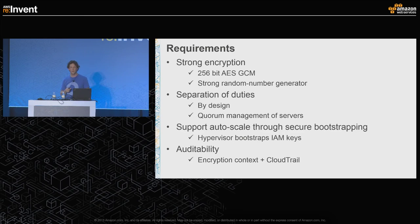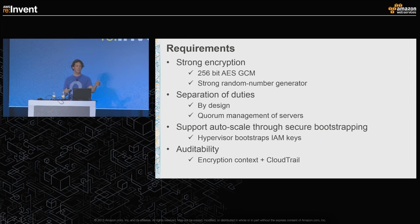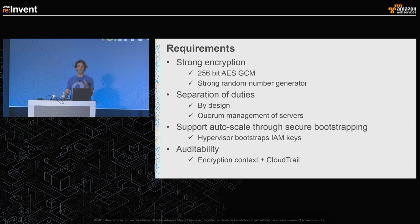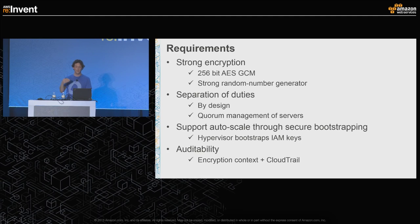Next we wanted separation of duties — this is a critical part of what a key service gives you. If the team managing the key service is different from the team managing your data, it means no one person has both access to your keys and to your data. By rolling out to KMS we no longer needed our operators to have access to those keys, and that means when they leave we don't have to deal with the same rotation models we'd otherwise need. In addition, Amazon themselves have quorum-based management and separation of duties in their own management of the KMS service.